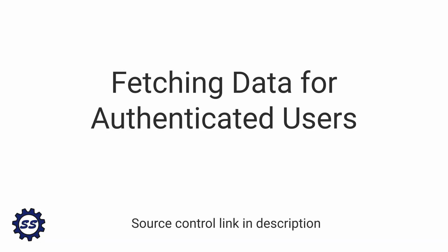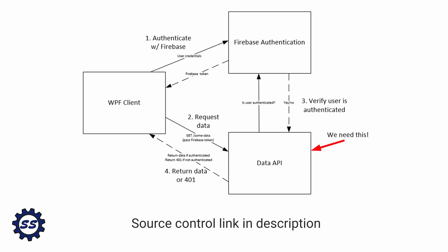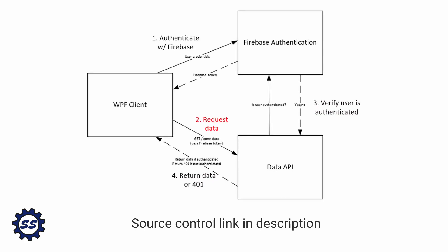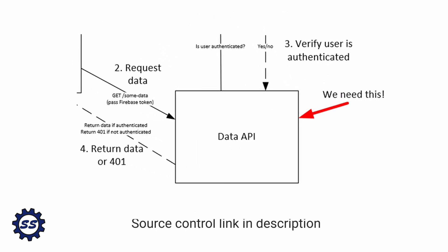Now that users can log into our application, let's fetch data for the authenticated user. To do that, we're going to need an API that will verify the authenticated user and then return data back to the client. There are really two parts: first, we'll create that API that verifies the user and provides data, and then we'll make a request from our WPF application to that API to get the data. In this first part, let's focus on creating that API.